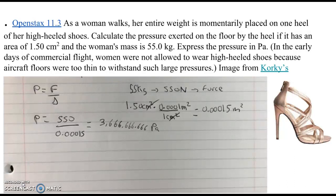As a woman walks, her entire weight is momentarily placed on one heel of her high heel shoe. Calculate the pressure exerted on the floor by the heel if it has an area of 1.5 cm² and the woman's mass is 55 kg. Express the pressure in Pascals. In the early days of commercial flights, women were not allowed to wear high heel shoes because aircraft floors were too thin to withstand such large pressures.